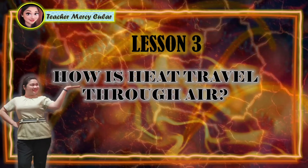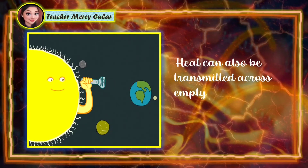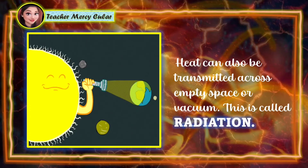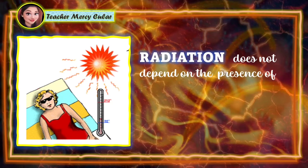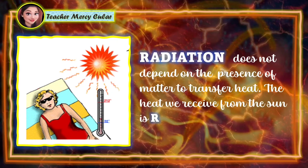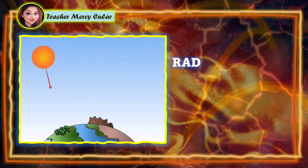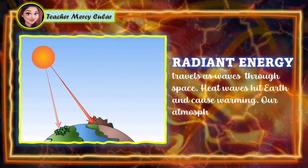Lesson 3: How does heat travel through air? Heat can also be transmitted across empty space or vacuum. This is called radiation. Radiation does not depend on the presence of matter to transfer heat. The heat we receive from the sun is radiant energy. Radiant energy travels as waves through space. Heat waves hit the Earth and cause warming.